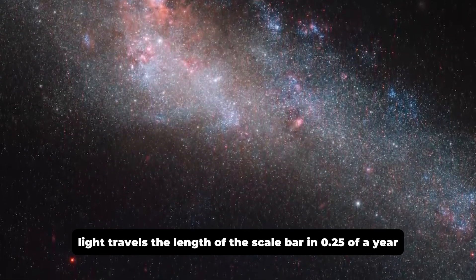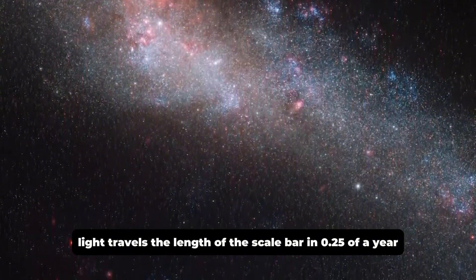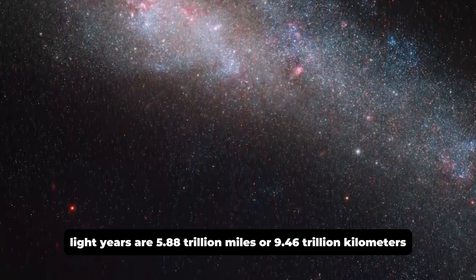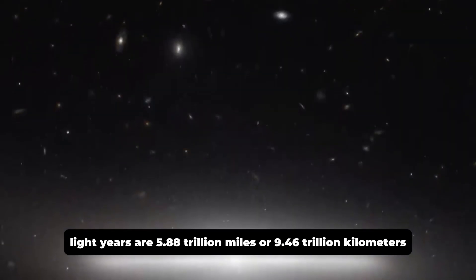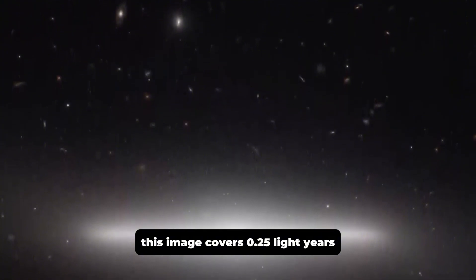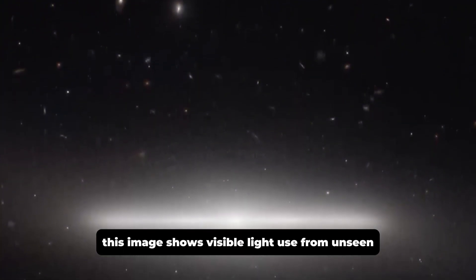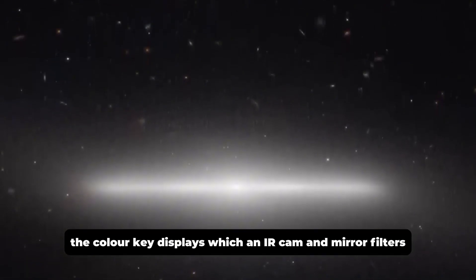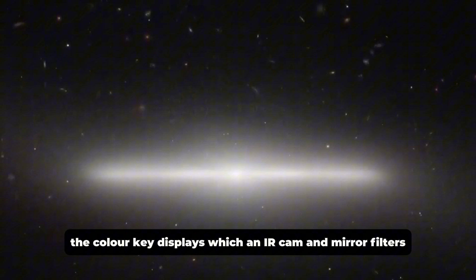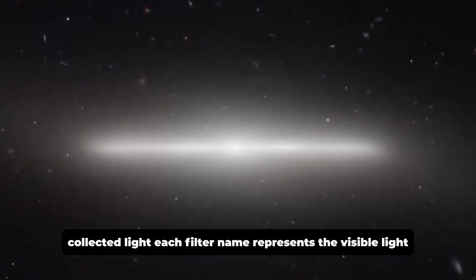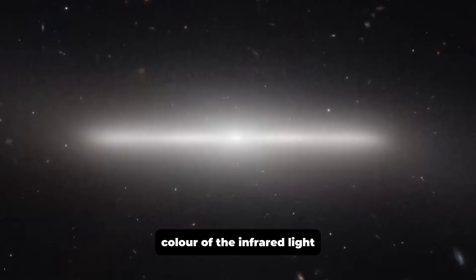Light-years are 5.88 trillion miles or 9.46 trillion kilometers. This image covers 0.25 light-years. This image shows visible light use from unseen near-mid-infrared wavelengths. The color key displays which NIRCam and MIRI filters collected light. Each filter name represents the visible light color of the infrared light it passes.